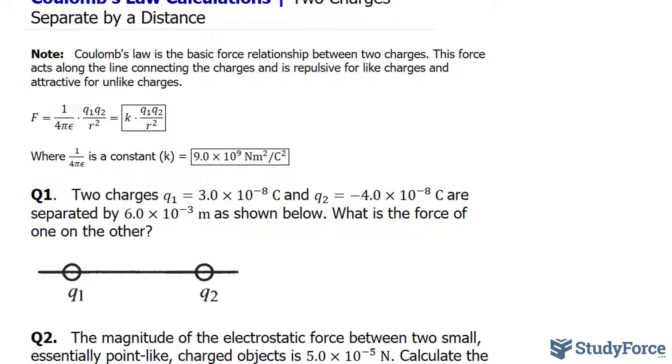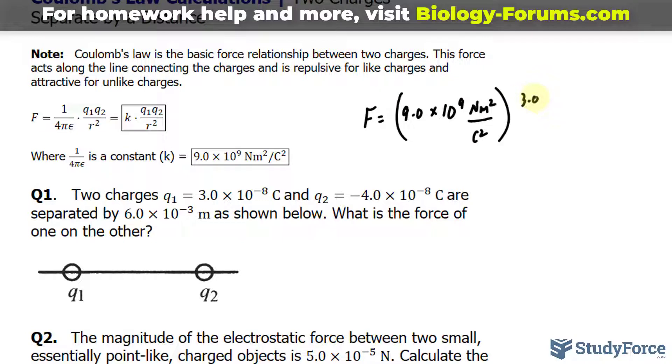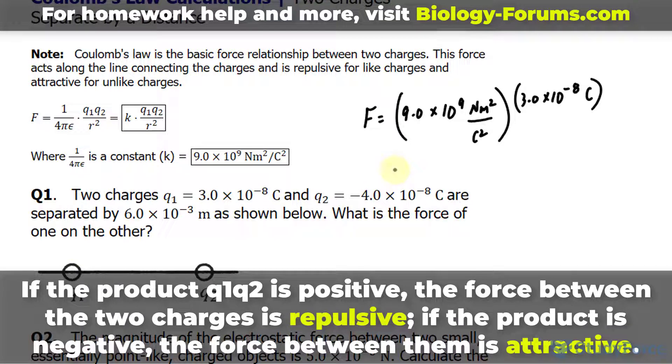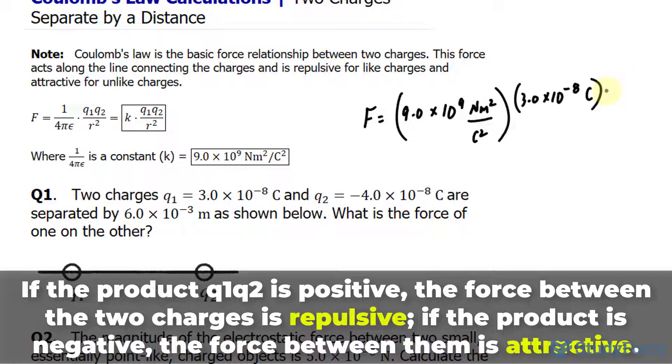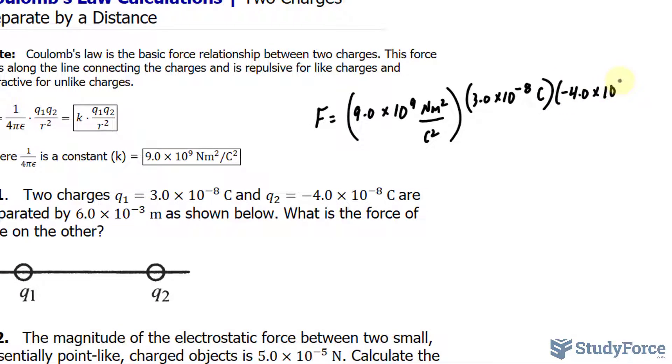Let's substitute these values into our formula. We have force equals the constant k, being 9.0 times 10 to the power of 9 newtons times meters squared per Coulombs squared. It's very important that you write down the units so you can see how they cancel out at the end. q1 is 3.0 times 10 to the power of negative 8 Coulombs. These two spheres are attracted to one another because one is positive and the other is negative. q sub 2 is negative 4.0 times 10 to the power of negative 8 Coulombs, divided by r squared, which is 6.0 times 10 to the power of negative 3 meters, all raised to the power of 2.